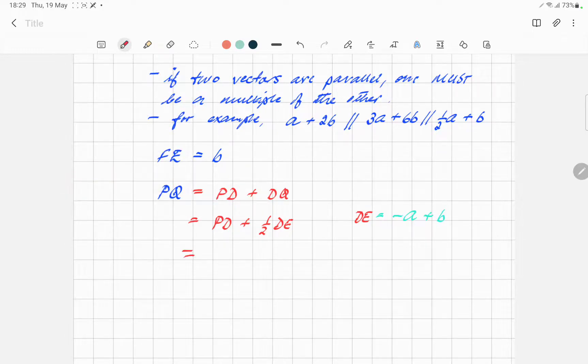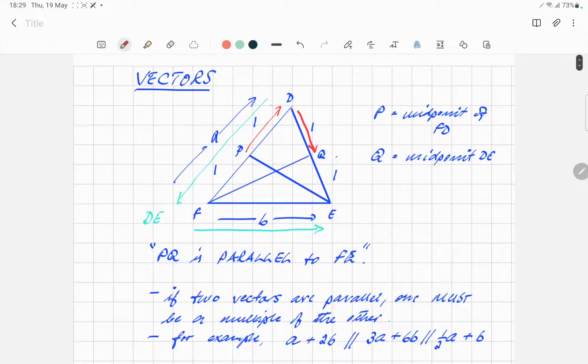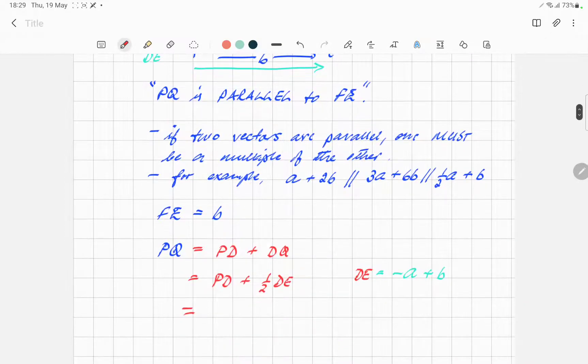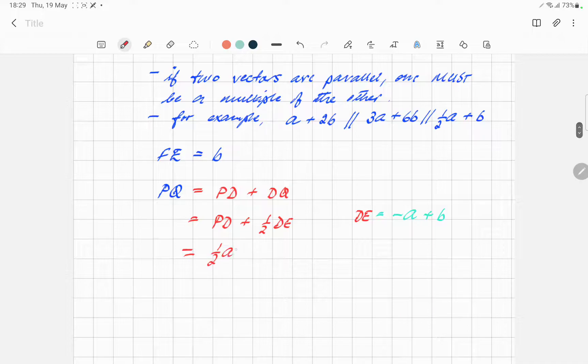So we're going to go back to this now. And then in the meantime, P to D, we can see is half of the vector A, isn't it? So it's going to be half A plus half times D to E, which is minus A plus B. Make sense? So you got half A, this one, right? I'm going to erase that, actually. Notice that's minus half A plus half B. Tidy that all up, and what do you end up with?